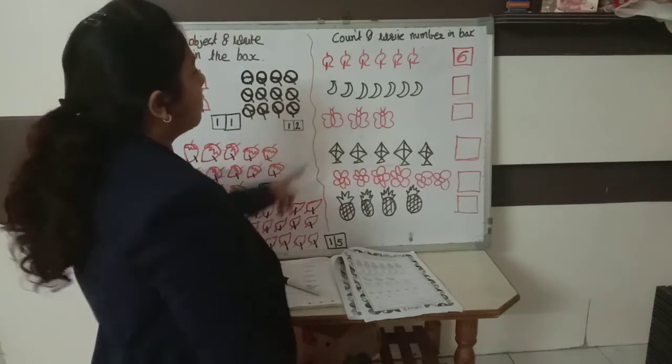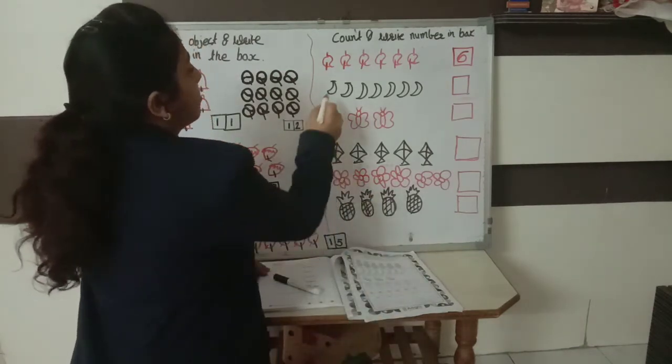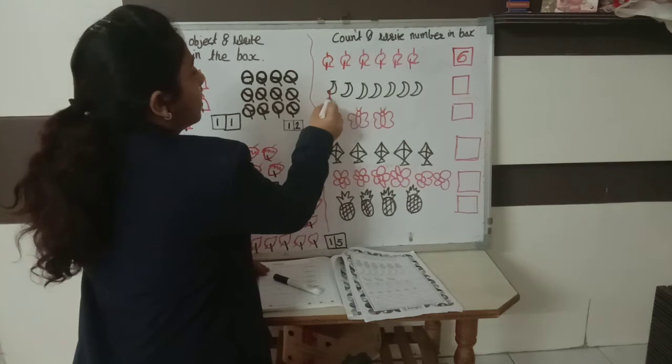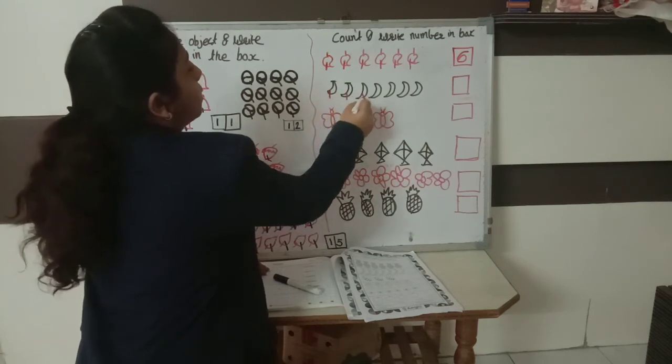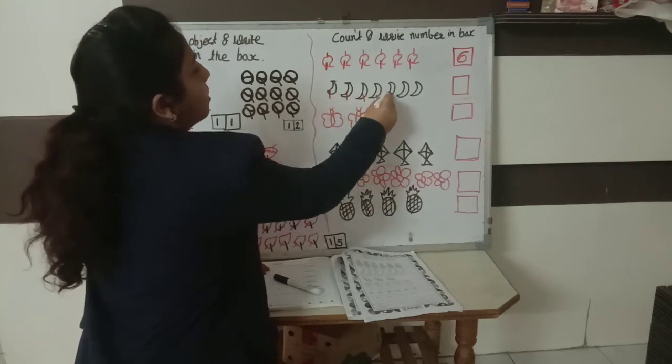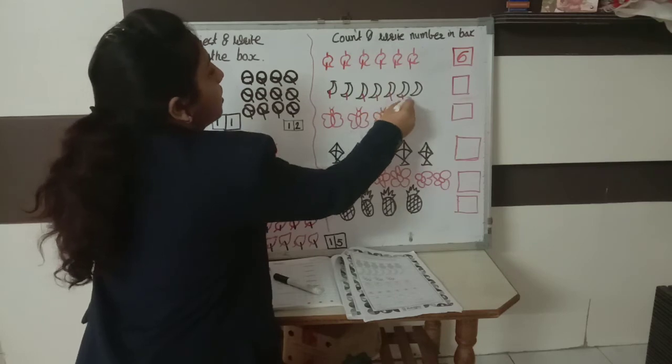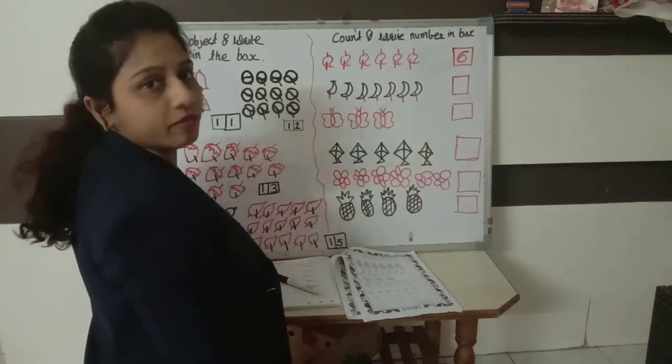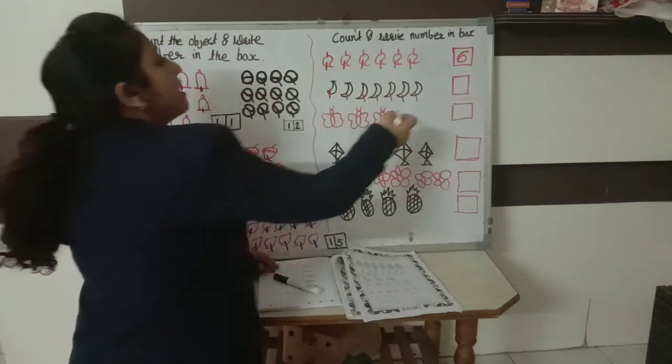Now these are bananas. How many bananas? Let's count. 1, 2, 3, 4, 5, 6, 7. How many bananas? Yes, 7.